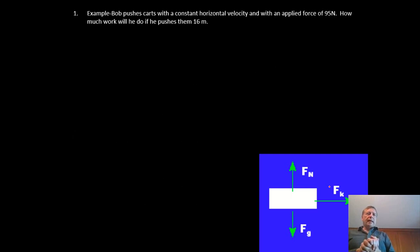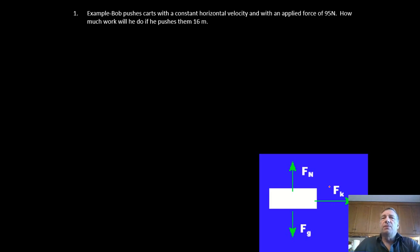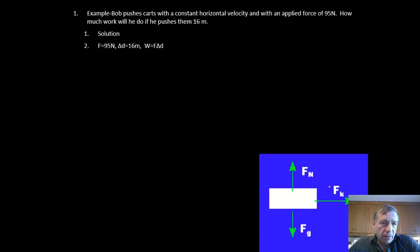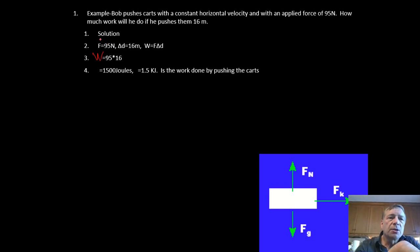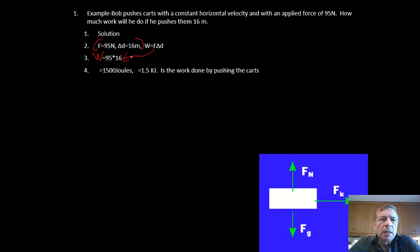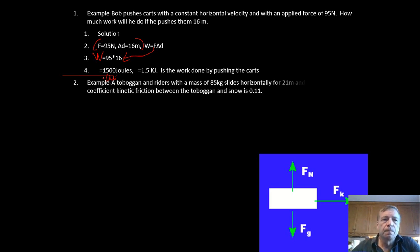Bob pushes a cart at constant horizontal velocity with an applied force of 95 newtons. How much work is done if he pushes it for 16 meters? Work = force × displacement = 95 × 16 = 1520 joules. We can convert that to kilojoules by moving the decimal three places: 1.5 kilojoules.